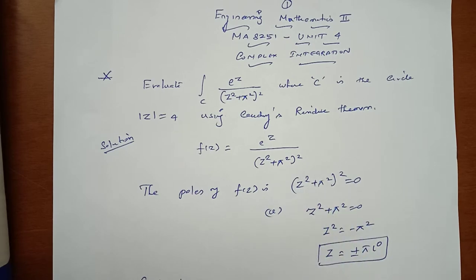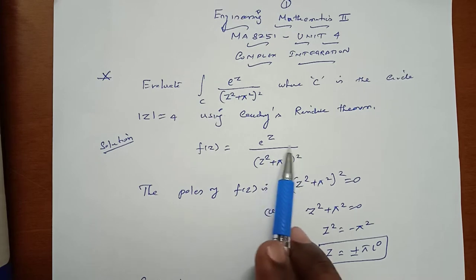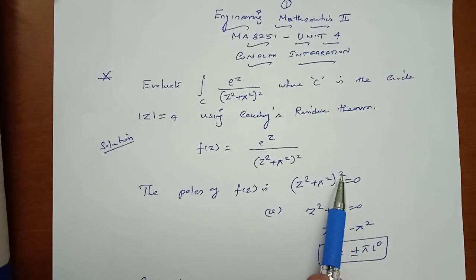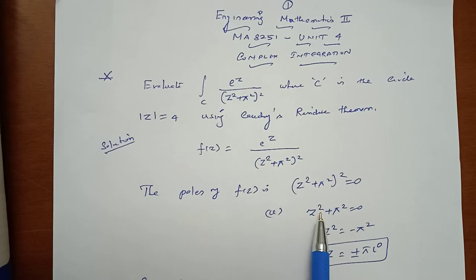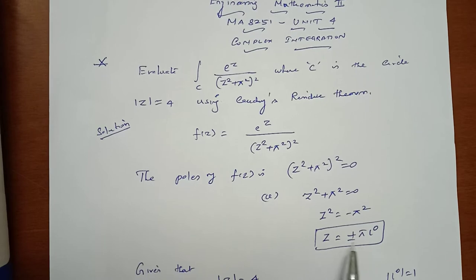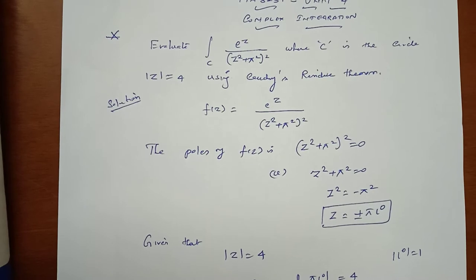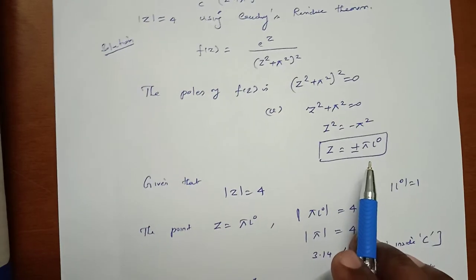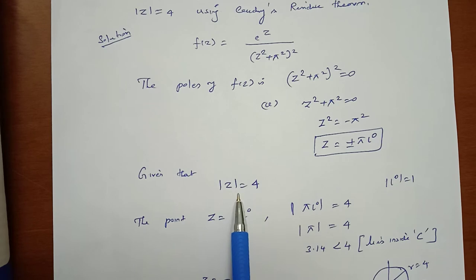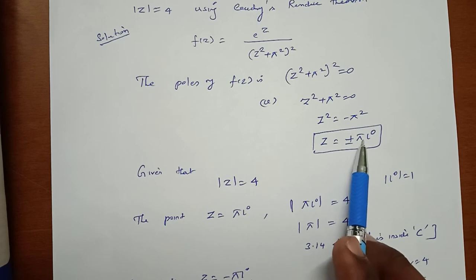First we have to compute the poles. The pole of f(z) is found by setting the denominator equal to zero: (z² + π²)² = 0. This gives a pole of order 2. From z² + π² = 0, we get z² = −π², so z = ±πi. We obtain two roots: z = +πi and z = −πi.